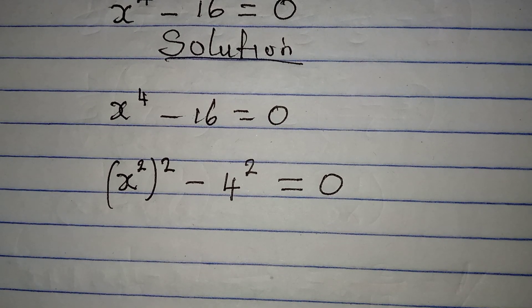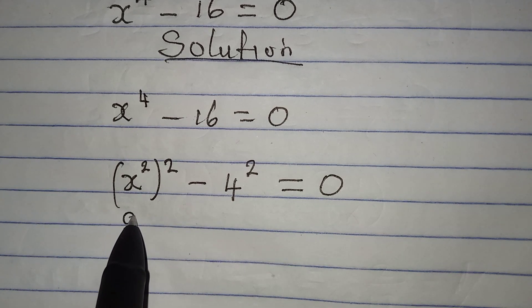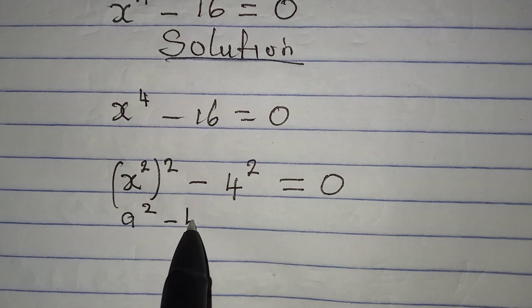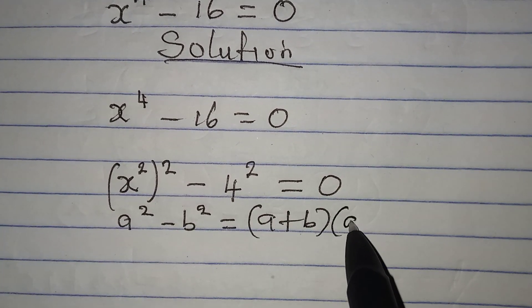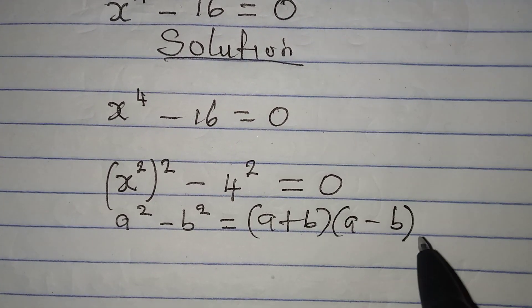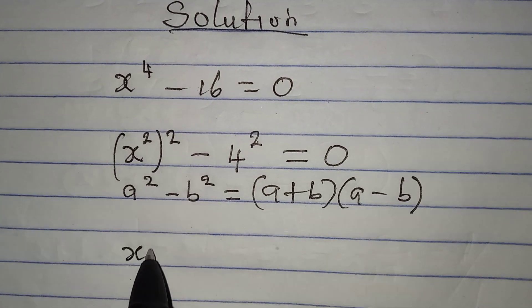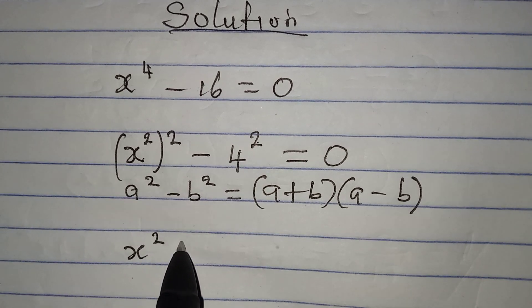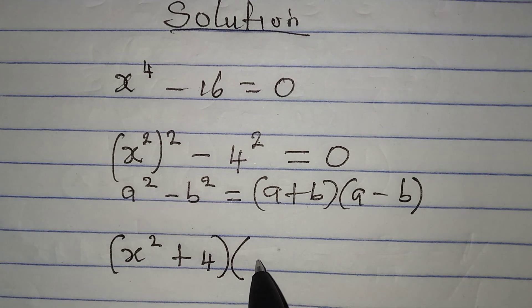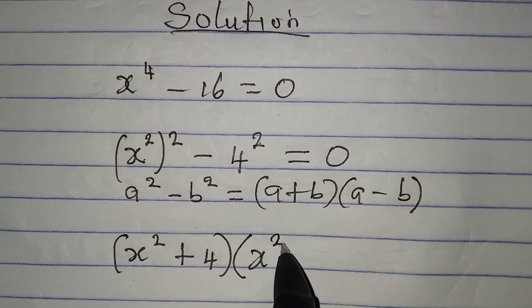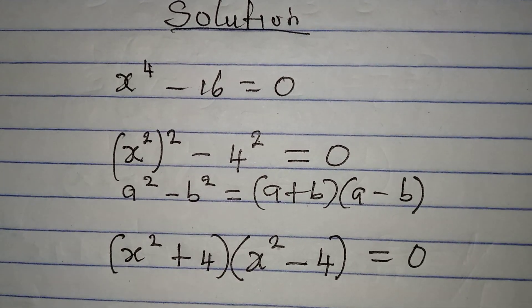The next thing is that we should apply difference of 2 squares. Remember if you have a squared minus b squared, this will give a plus b into a minus b. And this is the same difference of 2 squares that we have now. So I'm going to have x squared plus 4 in one bracket, and in the other bracket I'm going to have x squared minus 4. And the whole of this will be equal to 0.